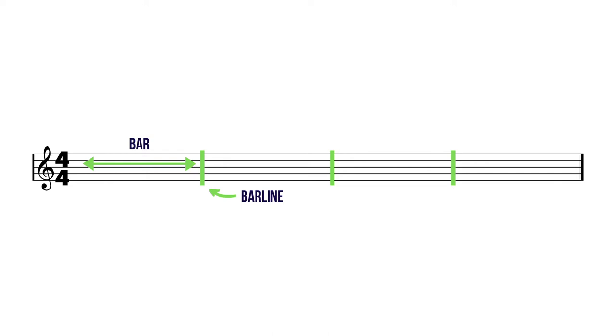Basically time signatures tell us how many of what kind. Let's begin by looking at what exactly the top number means. This top number tells us how many beats we have exactly in each bar. A bar is a little segment in the stave, divided up using bar lines — lines cut right down through the stave. In this example you can see the top number is 4, which means there are 4 beats per bar.